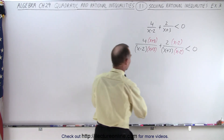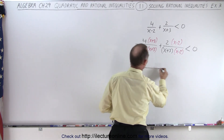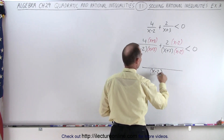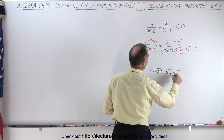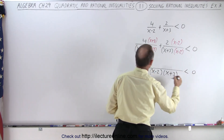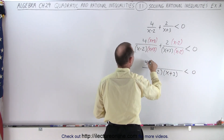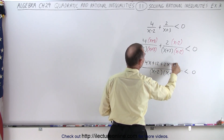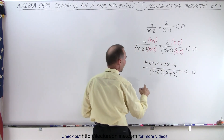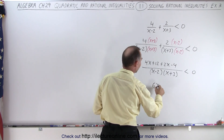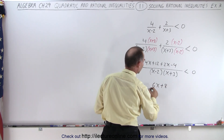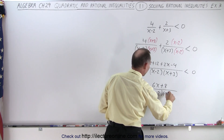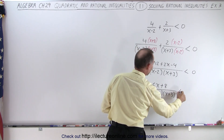Let's see what the numerator becomes. This will be written over a single denominator of (x minus 2) times (x plus 3), less than 0. In the numerator we have 4x plus 12, plus 2x minus 4. Simplifying that, we end up with 6x plus 8 in the numerator, divided by (x minus 2) times (x plus 3), less than 0.